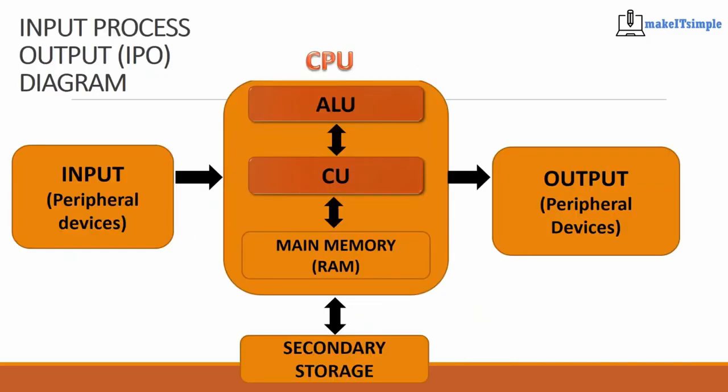This diagram here called input process output, or IPO, is basically how every single computer system works. Our computer system is similar to the human system where we get inputs, we process them, we get output. Sometimes you might get an input of a hot pot that's on the stove. You touch the pot, your brain processes this is hot, it will harm my hand, and you pull it away. That's input process output.